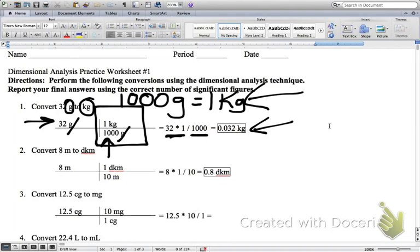Does that make sense? So the first one was set up completely for you. The only thing that I didn't write in there was this equivalent statement up here that I then turned into the conversion factor that you see right there. But does everybody understand why I oriented that equivalent statement into that particular conversion factor?